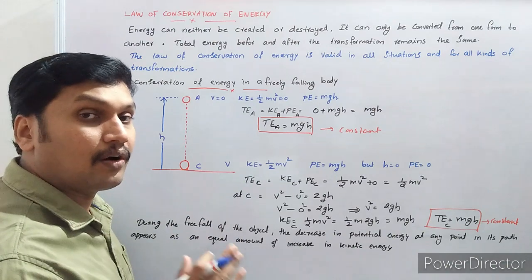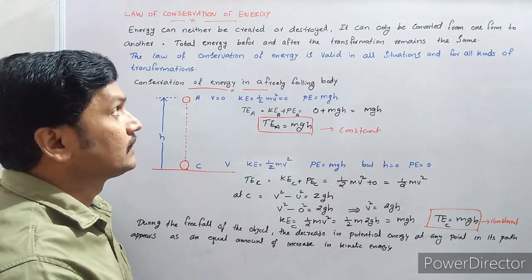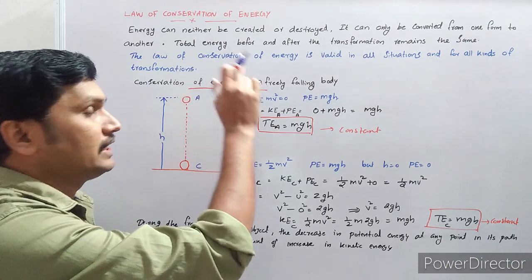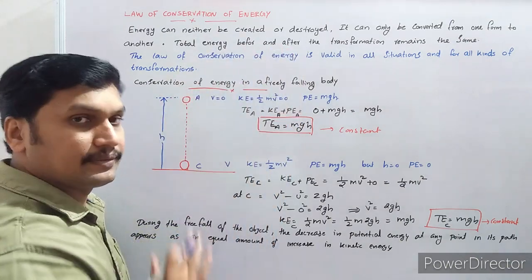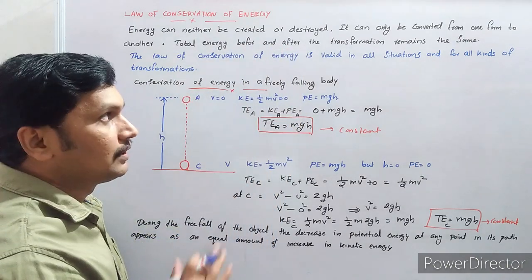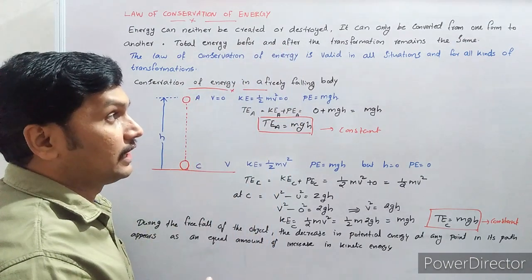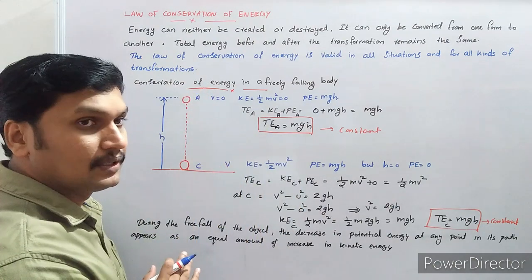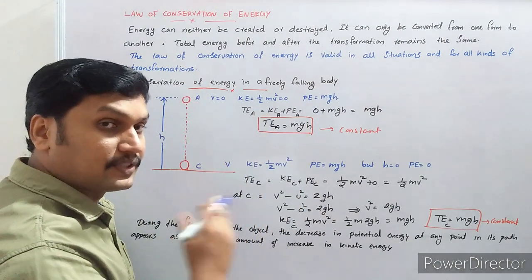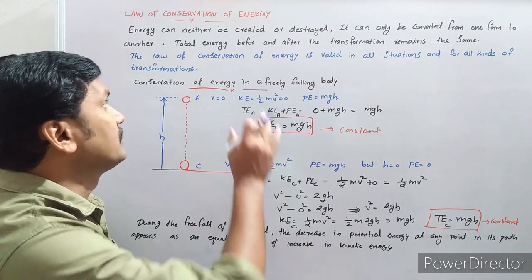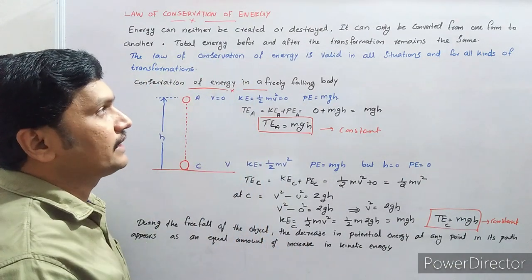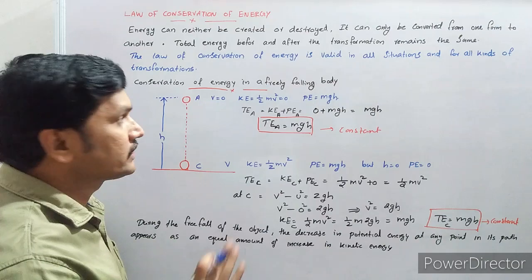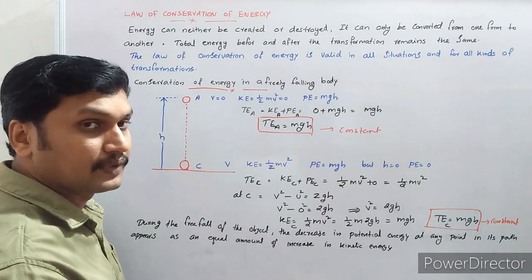Only one form of energy is converted into another form; we are not able to destroy the energy. This is the law of conservation of energy: energy can neither be created nor destroyed; it can only be converted from one form to another. After the conversion, the total energy before and after the transformation remains the same.